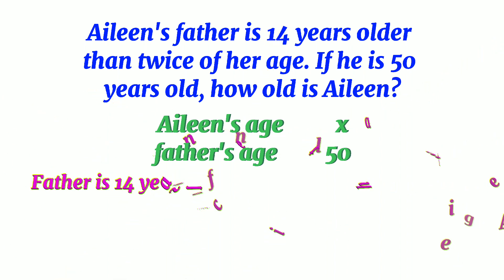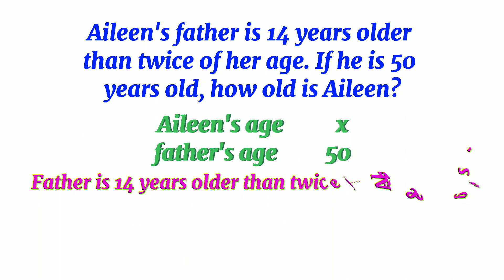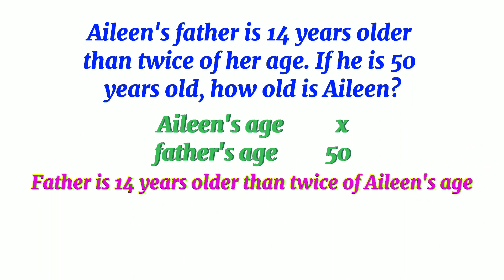It says that the father is 14 years older than twice Aileen's age. Our translation gives us: 50 is equal to 14 plus 2x. This is now our equation, and from it we will solve the value for X, which is the age of Aileen.